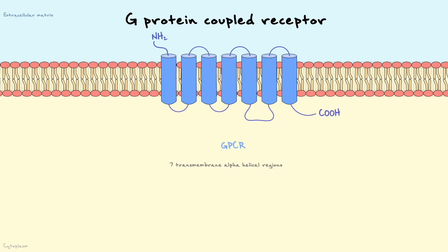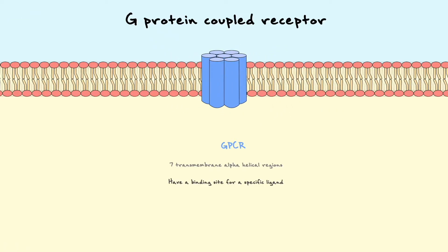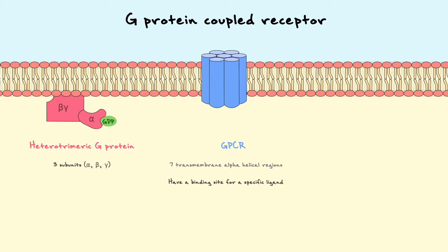All GPCRs consist of 7 transmembrane alpha helical regions and contain a binding site for a specific ligand, which in our case will be a specific neurotransmitter. These metabotropic receptors are coupled to a G-protein. For this video we will consider the heterotrimeric G-protein, meaning it is made out of three different subunits: one alpha, one beta, and one gamma. The alpha subunit is loosely associated with the membrane, whereas the beta and gamma subunits form a strong bound complex that is more tightly associated with the membrane. At rest, the alpha subunit is bound to a GDP molecule, and the G-protein is said to be in the inactive state.